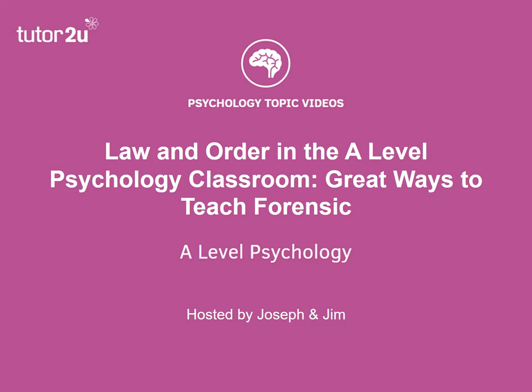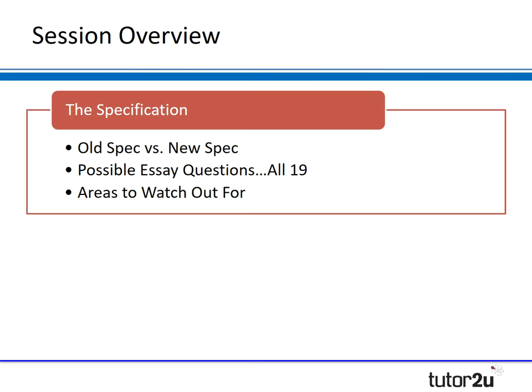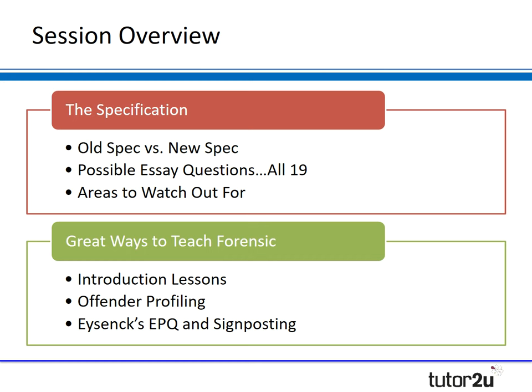Welcome to this Psychology CPD webinar looking at great ways to teach Forensic Psychology, particularly looking at the AQA specification, but should be useful if you're from other specs as well. We'll start by looking at the specification in detail, comparing the old spec versus the new spec. We'll look at the possible essay questions that can come up, around 19 potentials, and areas you might need to watch out for. In the second half, we'll look at great ways to teach Forensic Psychology: introductory lessons, a lesson on offender profiling, the Eysenck personality questionnaire, and an activity around signposting for evaluation purposes.